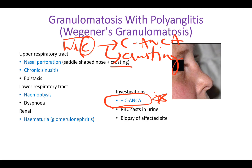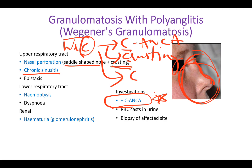C also stands for crusting — you can see in this image there is nasal crusting. Other nasal symptoms include saddle-shaped nose. Both saddle-shaped nose and crusting are seen in Wegener's granulomatosis. C also helps remember chronic sinusitis, since S is very similar to C.